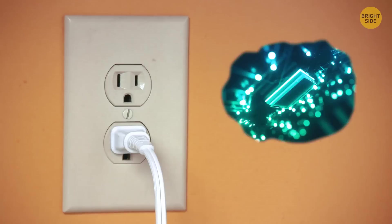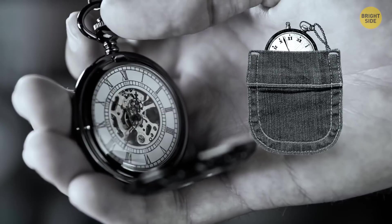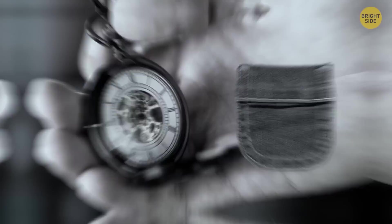Ever wondered what that small pocket on your jeans is for? People used to wear watches on chains. That small pocket was meant for it. Now, almost no one wears such a watch, but the pocket remains. You can still keep something small in there, like a ring.